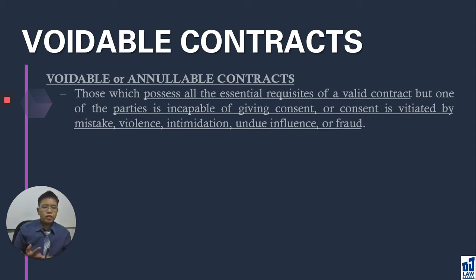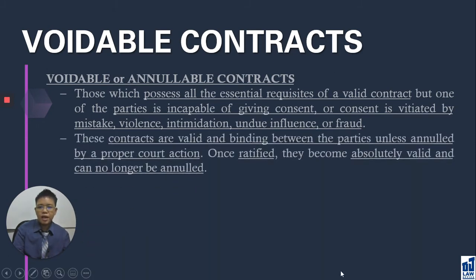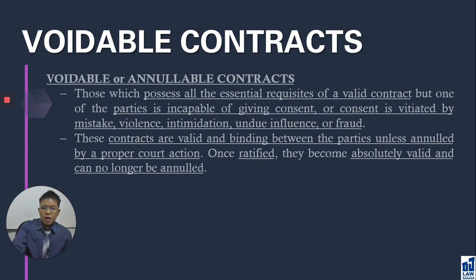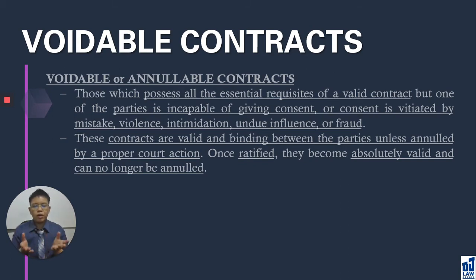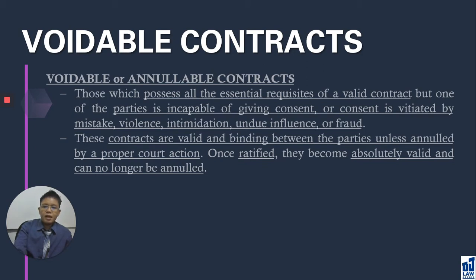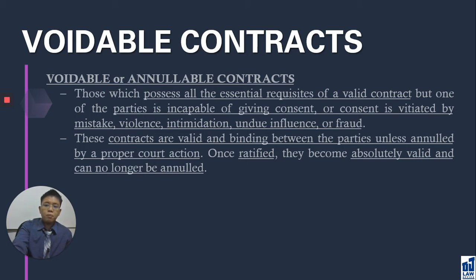There is a guilty party and there is an innocent party. In avoidable contracts, the injured or innocent party can ask for annulment or ratification of the avoidable contract. A voidable contract remains valid. If you entered into a voidable contract and did nothing afterwards, the contract will remain valid. Voidable contracts are contracts which are valid until they are annulled.